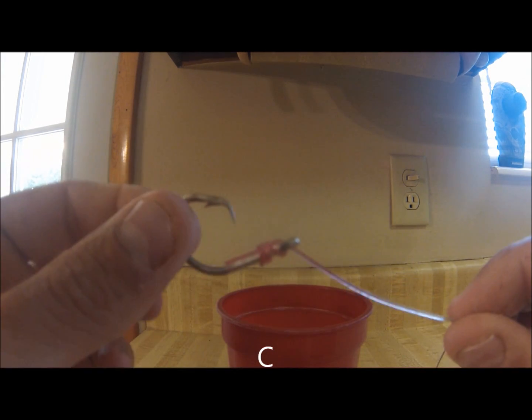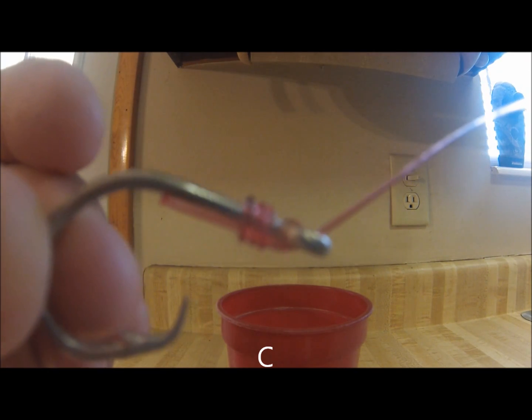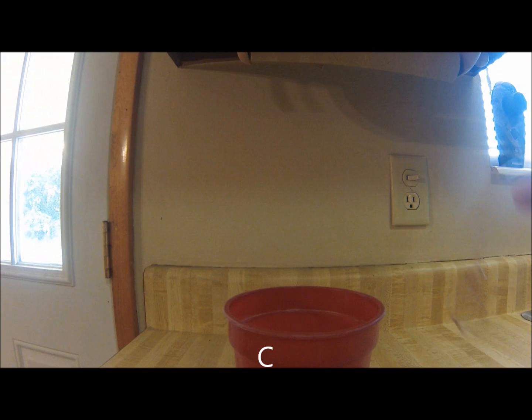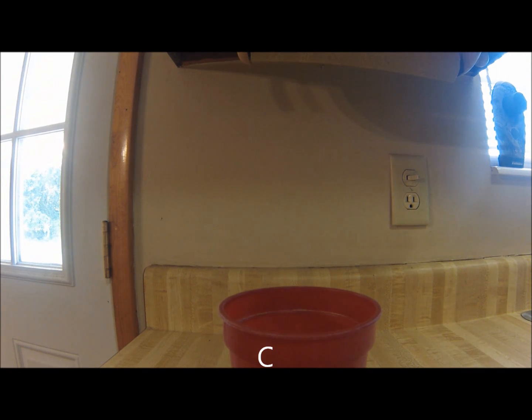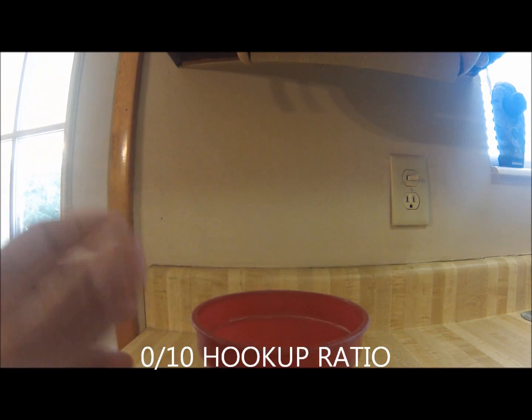Our second hook in the experiment is hook C. This hook is snelled improperly. The line comes through the back of the eye, making it nearly impossible to make a good connection in the corner of a fish's mouth. Let's start our experiment and find out our hook up ratio. After multiple attempts, there's your hook up ratio, 0 out of 10. If you're snelling your hook like this, you're flat out missing fish.